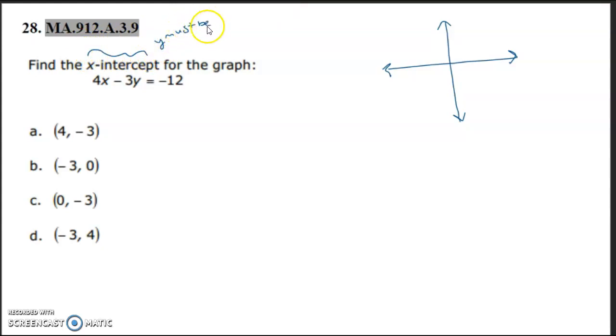When we write that, I'm going to show you how to solve it algebraically, but looking at your answers, we can already find the letter b, where y is 0. None of the other ones have a y of 0, so we could have, without even doing math, we just needed to know that an x-intercept has a y value of 0, and it's b.